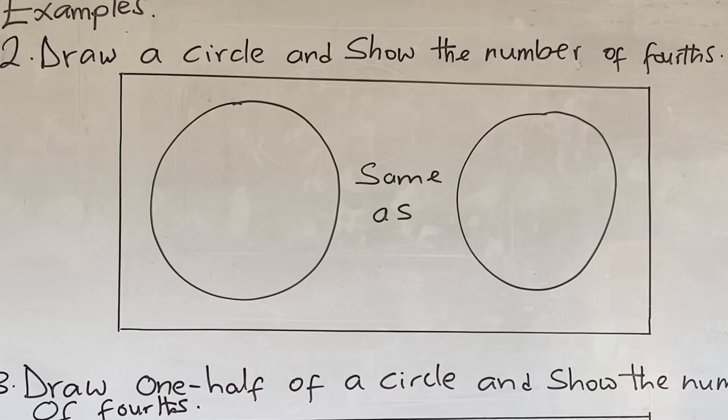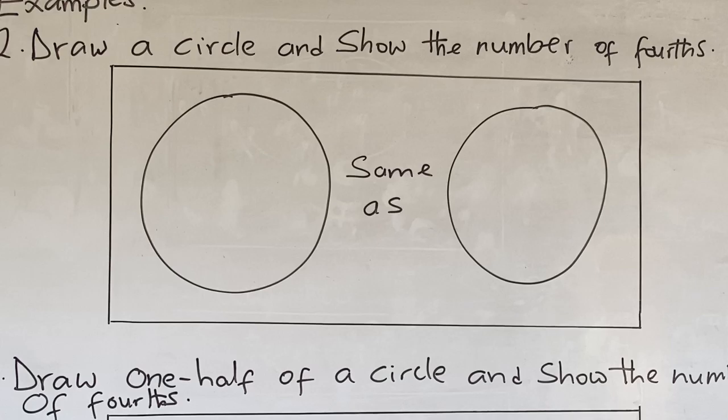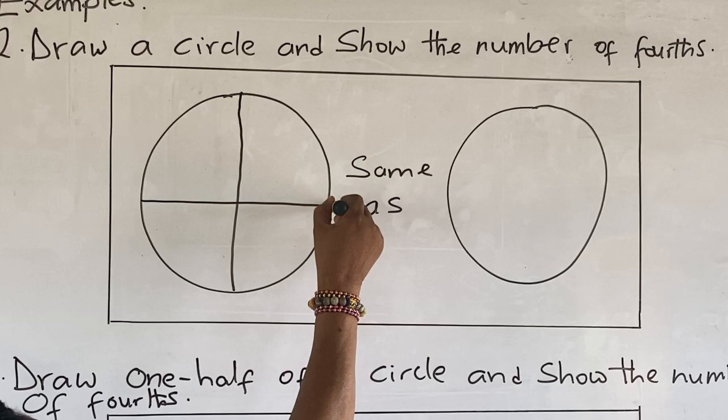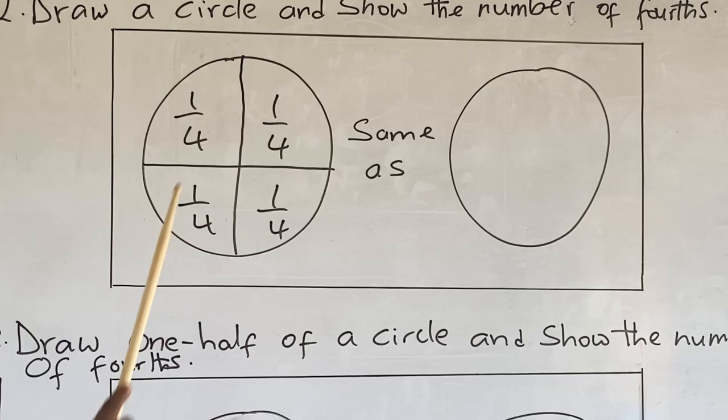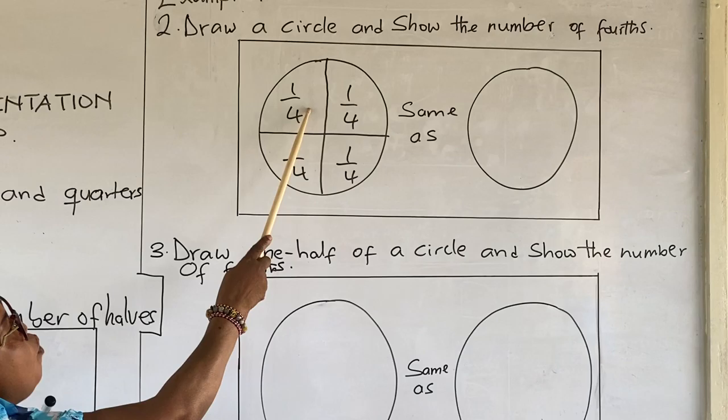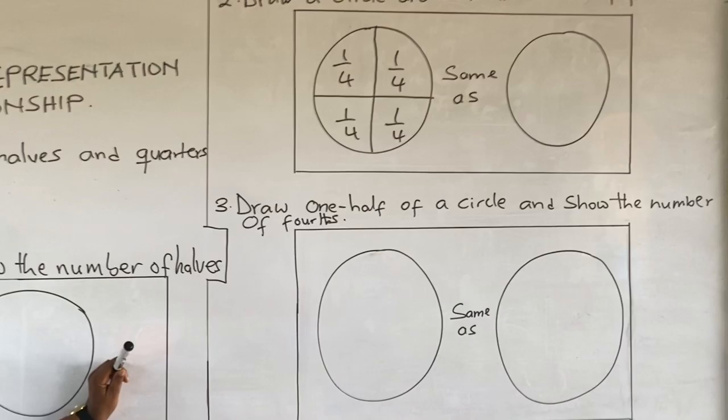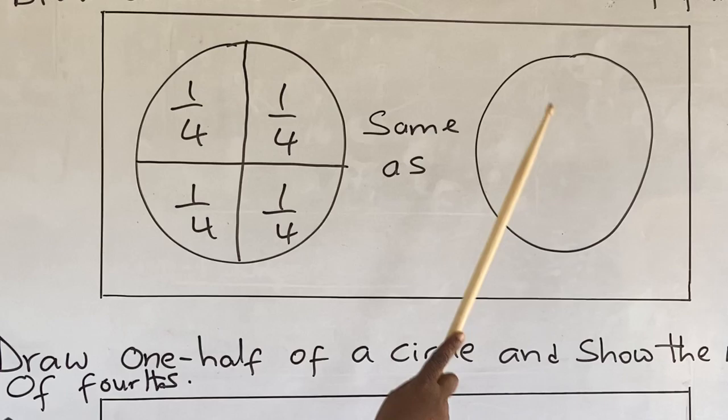Now, let's look at example two. We have to draw a circle and show the number of quarters, so we have to partition this circle into four equal parts. Four quarters equals to one whole. When a circle is equally divided into four parts, we have one, two, three, four. Each of the partitioned areas is known as a quarter. So four quarters is the same as one whole.